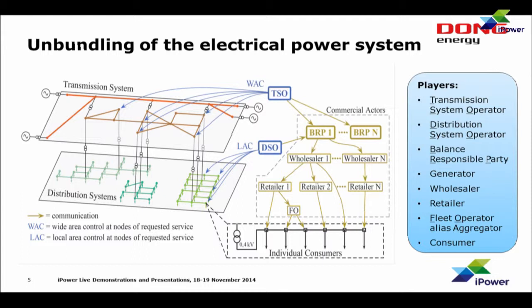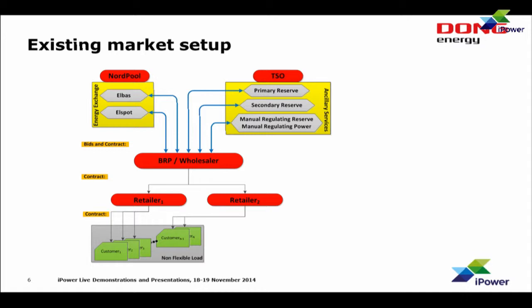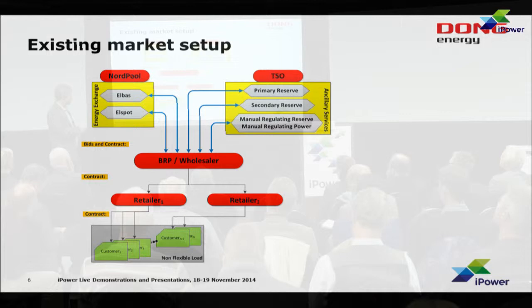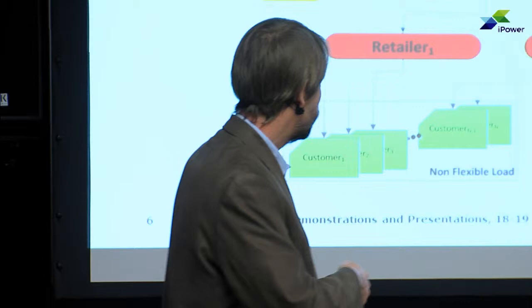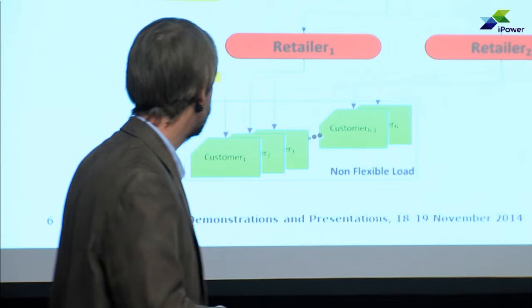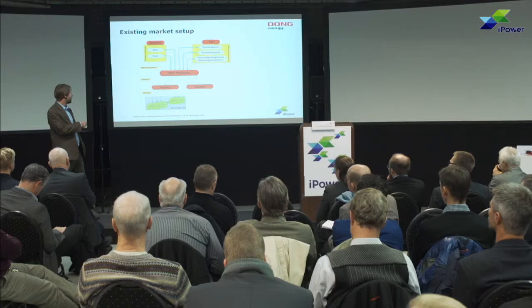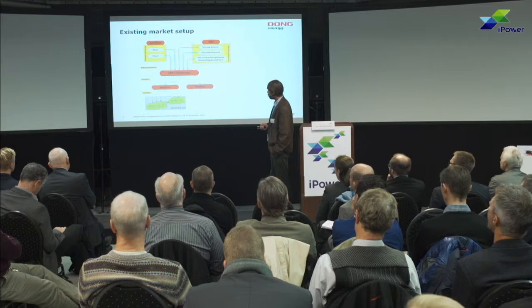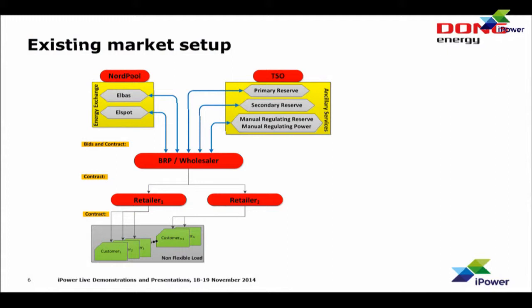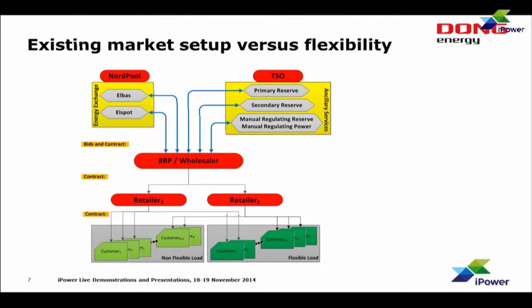These entities here have some roles in the market setup. The BRPs and wholesalers are mostly joined together now, and you have to be a BRP if you want to make trades on the energy exchange markets or on the ancillary service markets with the TSO as operator. The BRP and wholesaler are buying energy from the energy exchange on behalf of the retailers, and the retailers are then selling this to the customers. As the setup is today, if you are a customer, you can choose whichever retailer you like most. This is non-flexible load — so how do we deal with the flexible load? Well, today it is taken care of in exactly the same way as non-flexible load. We don't use it.